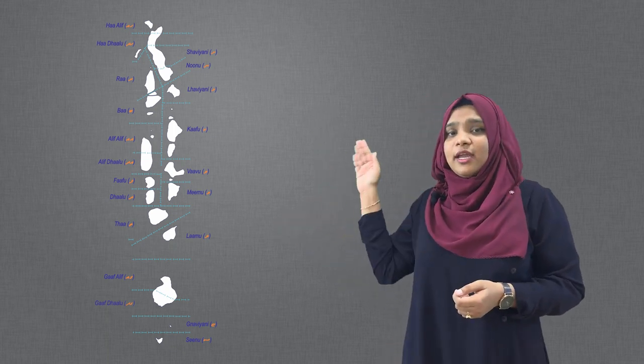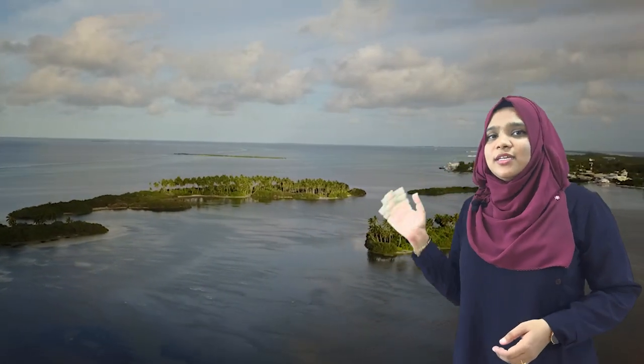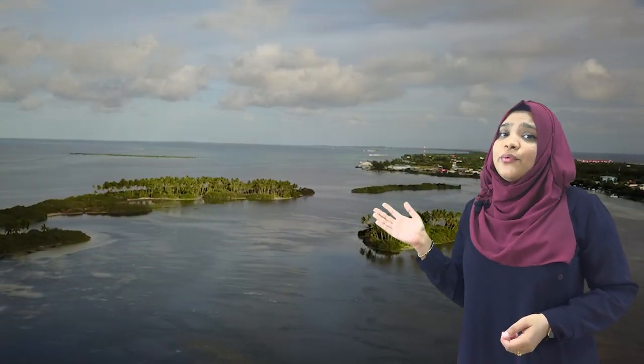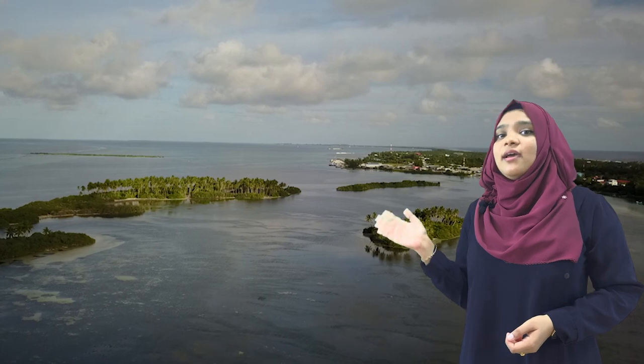Moving on. Our country actually has 26 naturally occurring vertical atolls and these atolls are divided into 20 administrative ones, with each atoll having its own inhabited and uninhabited islands.